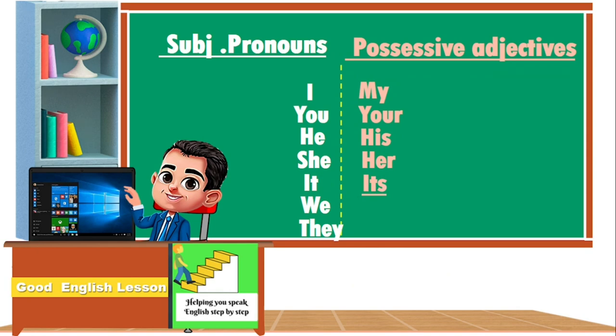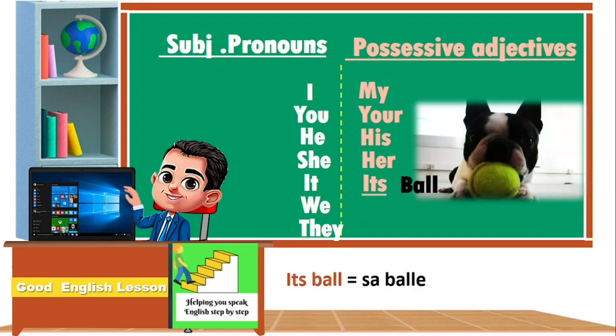Its. Its is used to show that something belongs to an animal. Its ball. Sometimes they use his or her for pets like dog and cat.